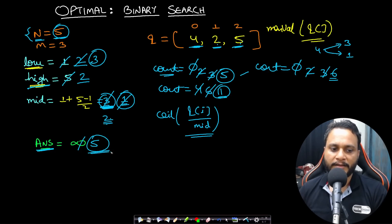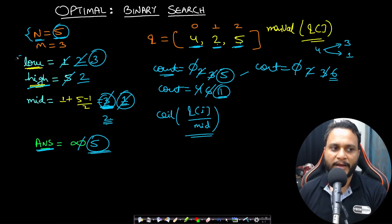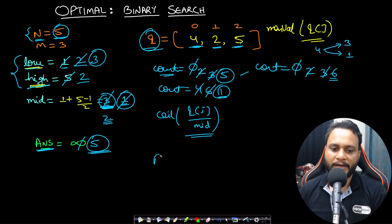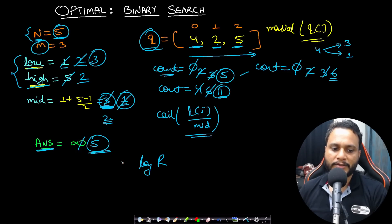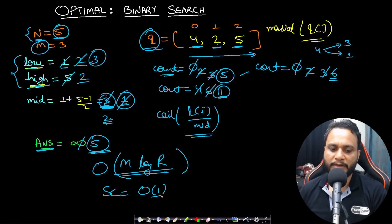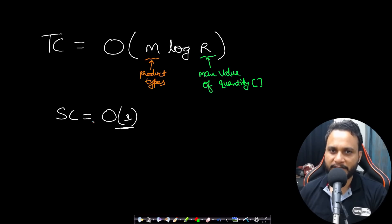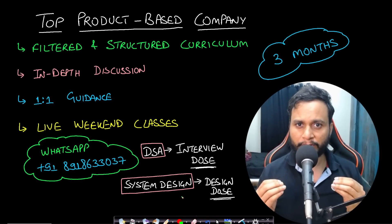The time complexity is O(m log r), where r is the maximum value of the quantities array and m is the number of product types — binary search takes O(log r) iterations and each iteration scans the array of size m. The space complexity is O(1) since no extra space is used.